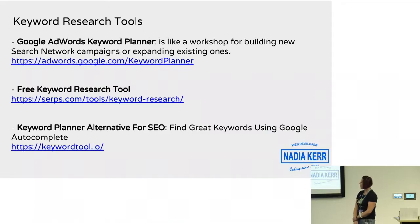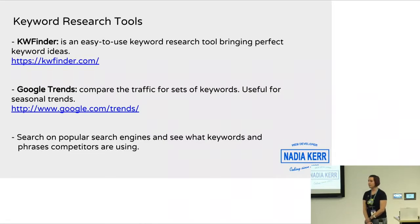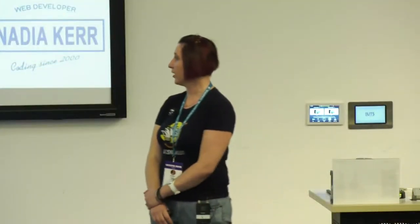A couple more useful tools: Keyword Finder, and Google Trends, which is also really handy if you're starting out with a business or even if you have an existing one. You can look at trending phrases, keywords, and terms on the internet — a really good way to see what terms are ranking well at the moment. One other really useful thing is to look at what your competitors are doing: check the title tags and descriptions of competitor sites that are ranking higher than you. There's no harm in using those same words in a different way on your website.